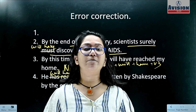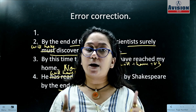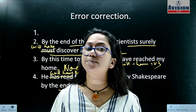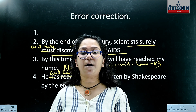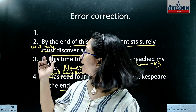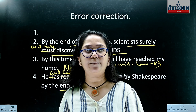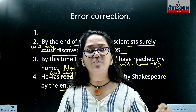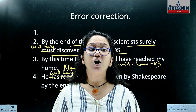What was the present perfect tense? It refers to the recent past. And what about past perfect tense? It refers to the past of the past. In future perfect tense, a certain time is mentioned in the future.